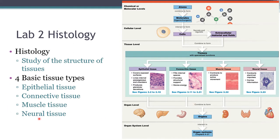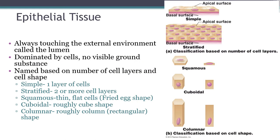Recall that there are four basic tissue types: epithelial tissue, connective tissue, muscle tissue, and neural tissue, and you were sort of briefly introduced to what these tissues do. We're going to focus on each one individually. This lecture will cover epithelia, the next one connective tissue, and the last one will be muscle and neural tissue. We'll start with epithelial tissues.